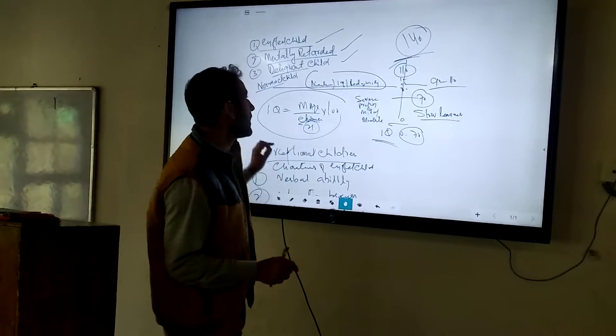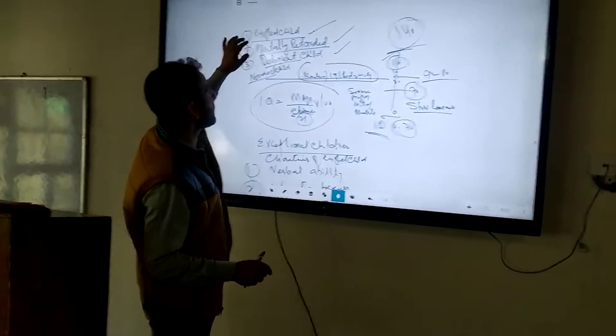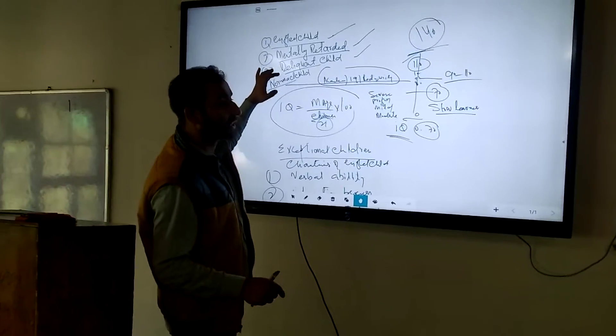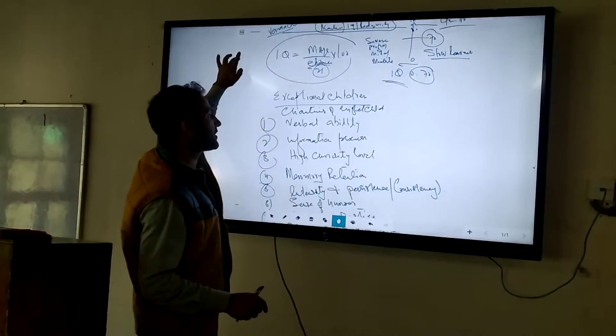This definition was established in 1962. Now, we have three types of exceptional children: gifted children, mentally retarded children, and dedicated children.